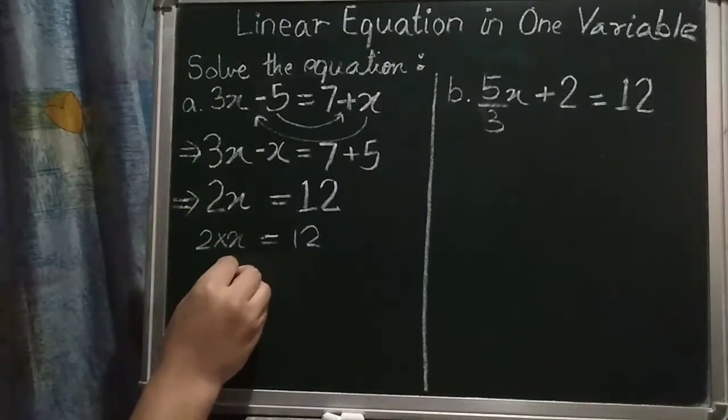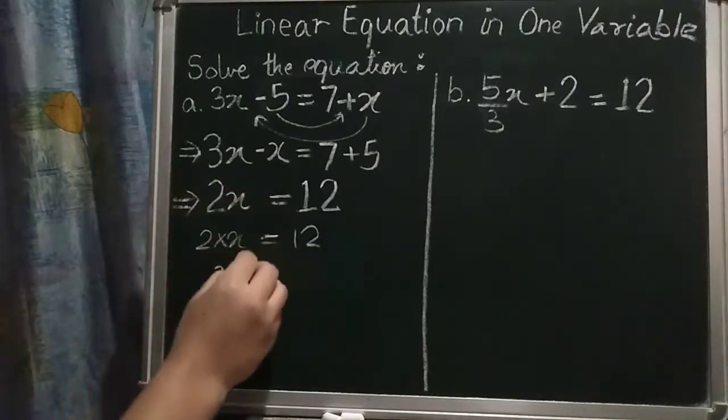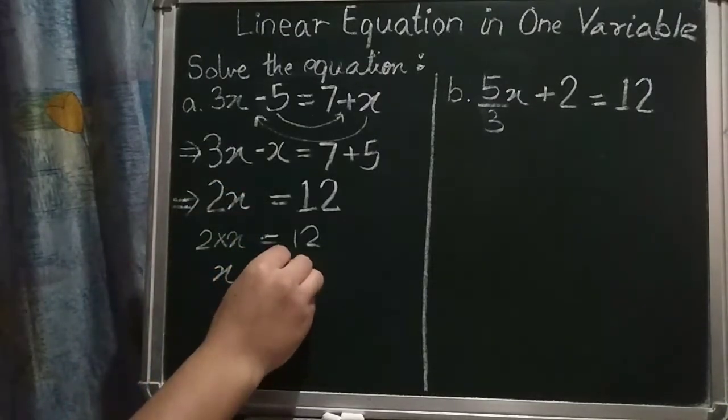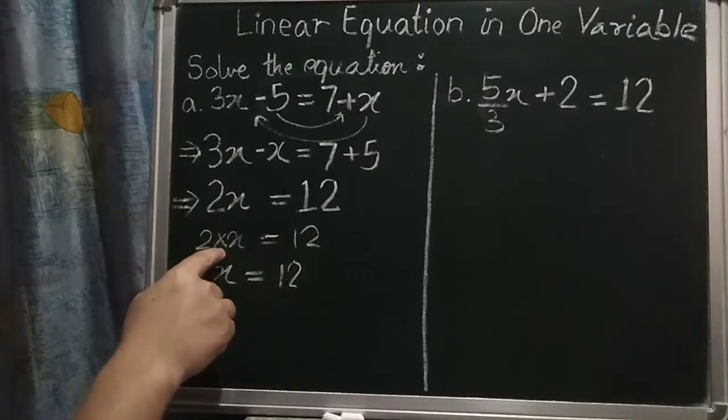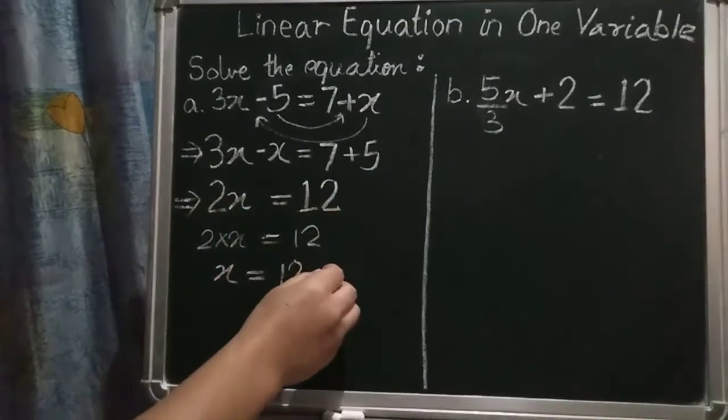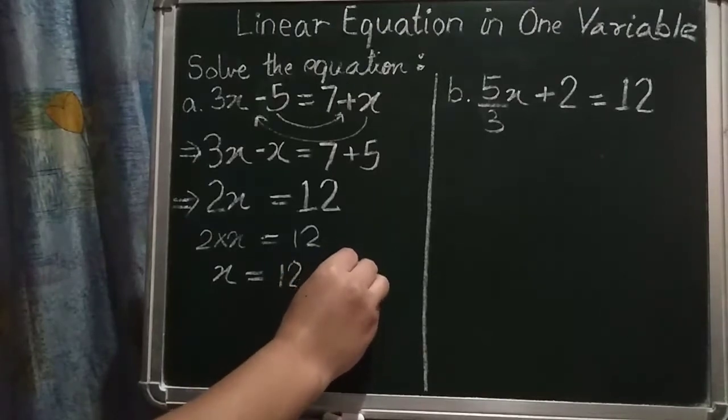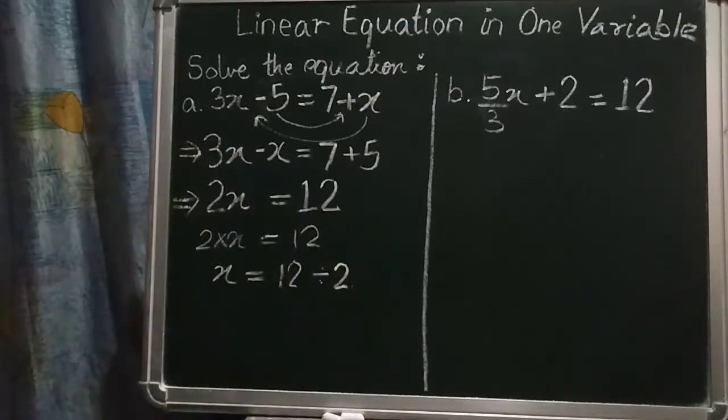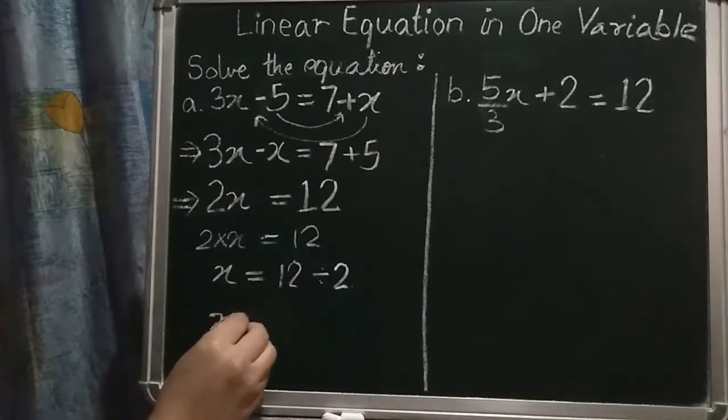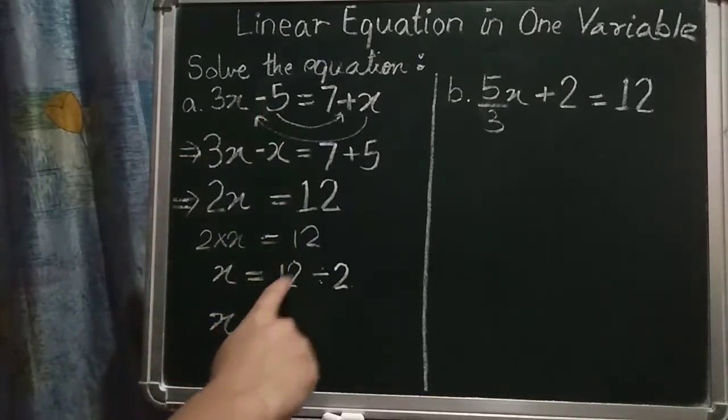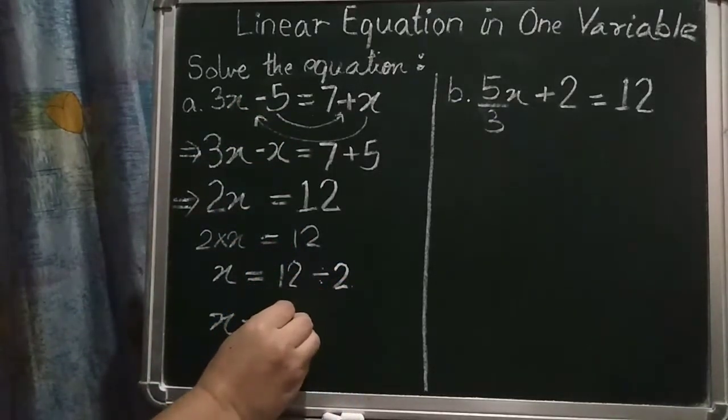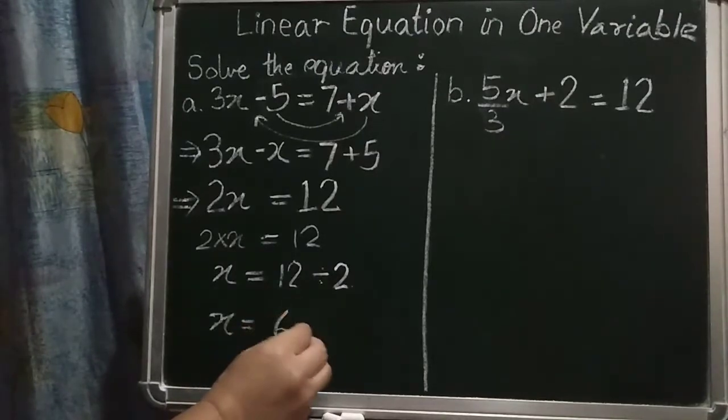x only will remain over here. Here, equal sign, 12. But it multiply is here, it will go, it will become divide 2. So x is equal to, if I divide 12, 12 by 2, then answer will become x is equal to 6.